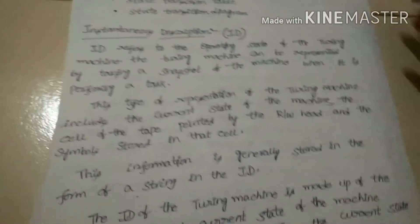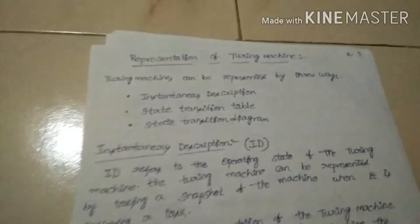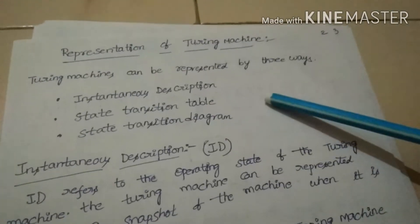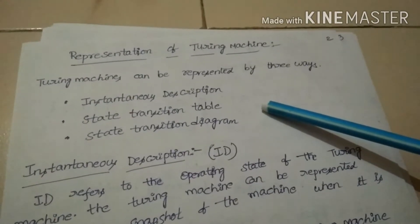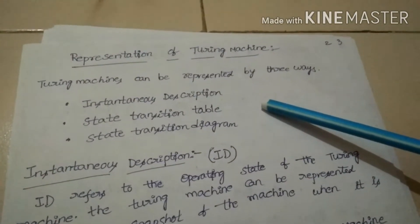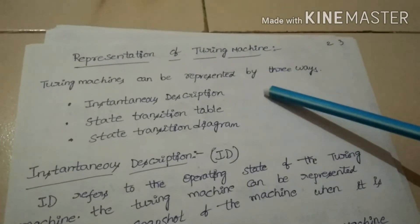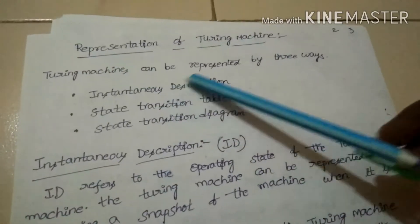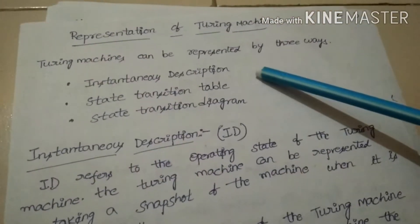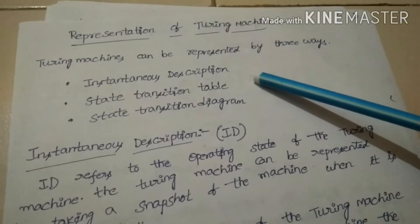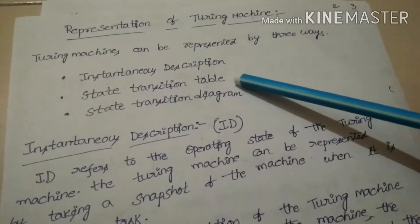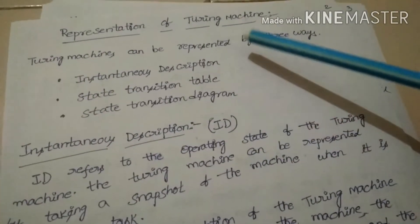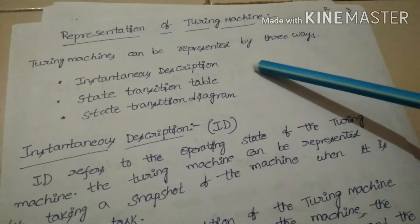Next, we look at how to represent the Turing machine. There are three ways a Turing machine can be represented. The first one is instantaneous description. The second one is the state transition table. The third one is the state transition diagram.